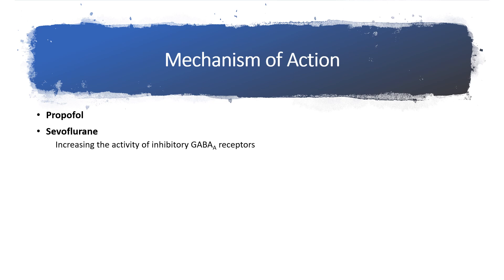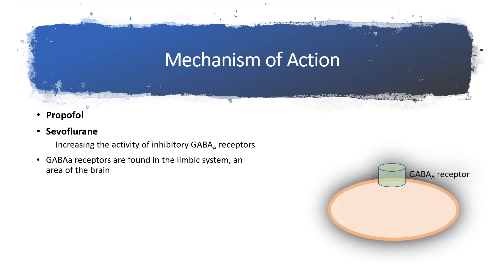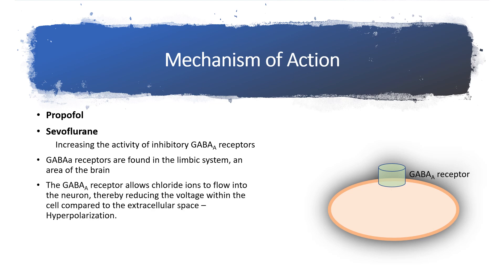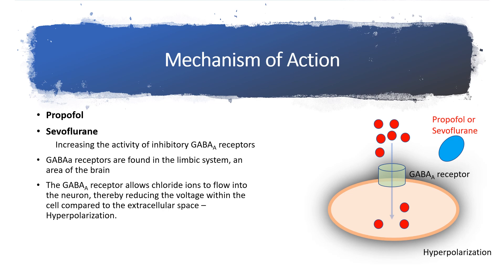Now let us look at the mechanism behind general anesthetics — specifically propofol and sevoflurane. They increase the activity of inhibitory GABA receptors. These receptors are a type of neurotransmitter receptor found in the limbic system, an area of the brain involved in memory and emotion. The GABA receptor allows the influx of chloride ions, resulting in hyperpolarization of the neuron — the voltage within the cell becomes more negative than the extracellular space — and this decreases the likelihood that the neuron will fire. Both propofol and sevoflurane increase the chloride current going into the cell.